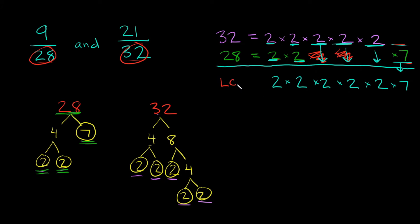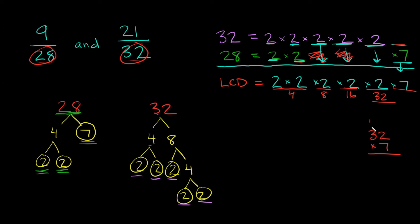So now the lowest common denominator of 9 over 28 and 21 over 32 is going to be equal to this whole expression. Let's simplify: 2 times 2 is 4, 4 times 2 is 8, 8 times 2 is 16, and 16 times 2 is 32. So all we're left with is 32 times 7. 2 times 7 is 14, 7 times 3 is 21, 21 plus 1 is 22. So our answer is 224. The least common denominator is equal to 224.